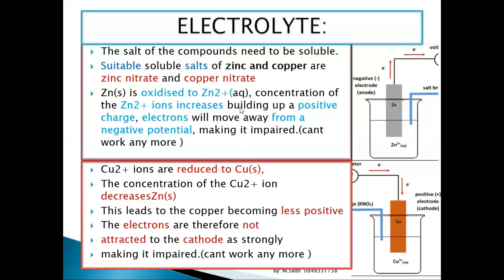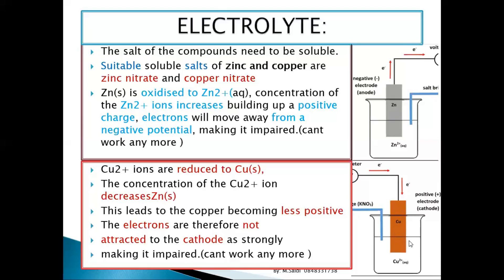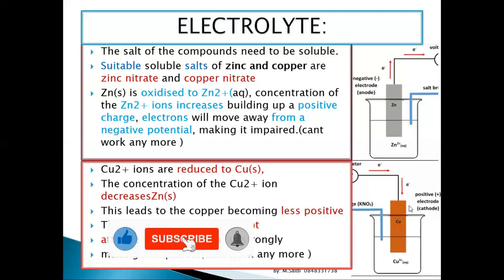On the copper side, Cu²⁺ ions are reduced and form copper solid. The concentration of copper ions (Cu²⁺) decreases as they are used up. The copper side becomes less positive because the positive charges have been consumed forming solid copper. Since this is supposed to be the positive terminal, if it loses its positive charge, electrons from the zinc side are no longer attracted to it — the cell becomes impaired.